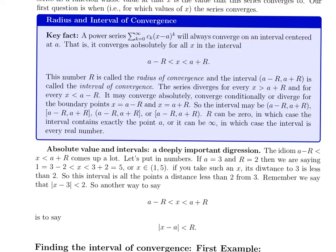Let me remind you of the key facts: if you have a power series, it's always going to converge on an interval centered at a — centered at the point at which the series itself is centered, x minus a to the k. So centered at a means all the points from a minus some number to a plus some number. That interval's r is the radius, just like in a disk — all the points from a minus r to a plus r, and possibly including the endpoints.